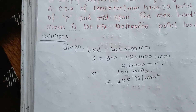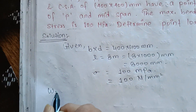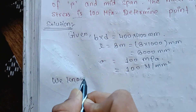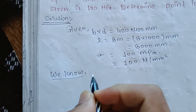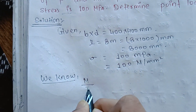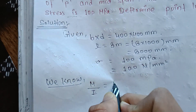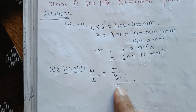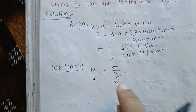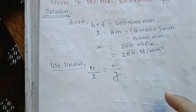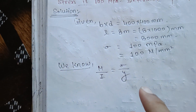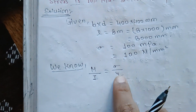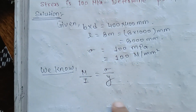We know the formula: M by I is equal to sigma by y. This is the flexural equation. From the flexural equation, we will find the required values.